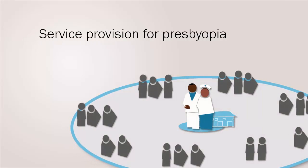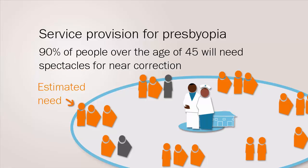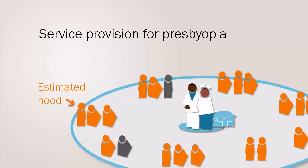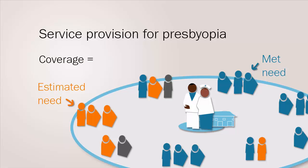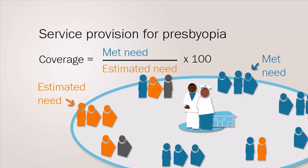Service provision for presbyopia begins with estimating the need. Local studies can be used to estimate the need in a population. It is also reasonable to assume that 90% of people over the age of 45 will need spectacles for near correction. If some services are already in place, then an estimate of the met need can be obtained by carrying out a survey of people aged over 45 using a rapid assessment method called RARE — Rapid Assessment for Refractive Error. Coverage can then be calculated by dividing the met need by the estimated need and multiplying by 100 to give a percentage.